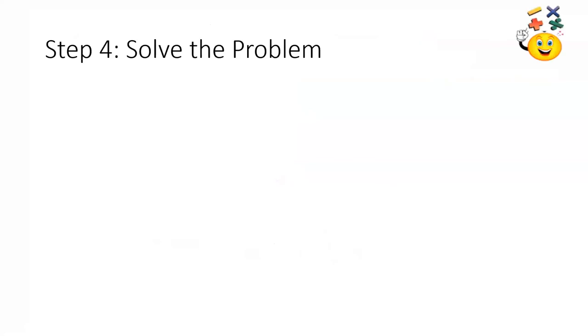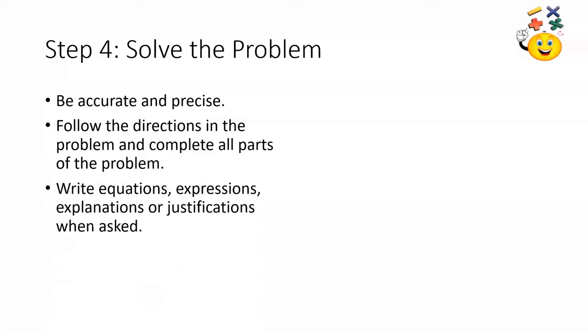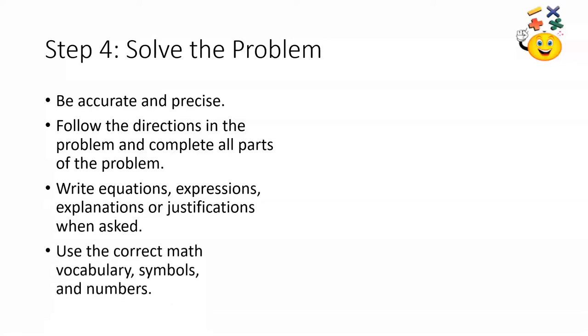Step 4 in the process is to solve the problem. We've already done a lot of the hard work because we really made sense of the problem and have a really good representation. Now, we're going to make sure that we are accurate and precise — that means we didn't make any mistakes when creating our representation and that we checked our work. We're going to make sure we follow the directions in the problem and complete all parts. We will make sure to write equations, expressions, explanations, or justifications if we have to, and we want to make sure we use correct math vocabulary, symbols, and numbers.